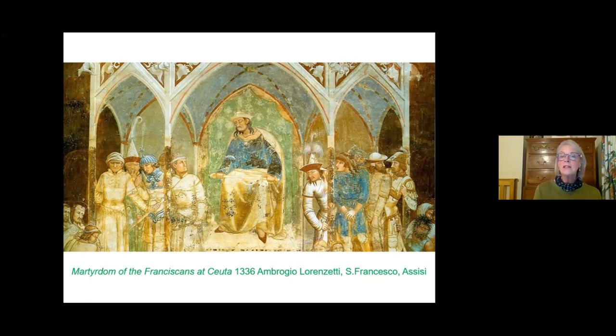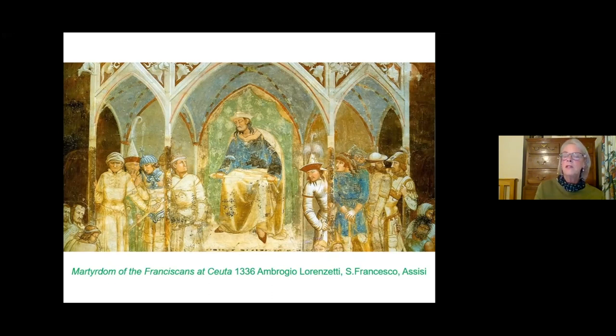In this particular image by Ambrogio Lorenzetti of 1336, you can see Mongolians — the Tartar hat, the moustaches, and wonderful headdresses — from the martyrdom of the Franciscans in San Francesco in Assisi. It shows that Sienese artists and people were engaging with the wider world to quite an extent, and that textiles were a central part of this very symbiotic relationship with other places.